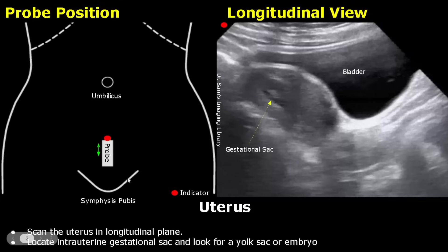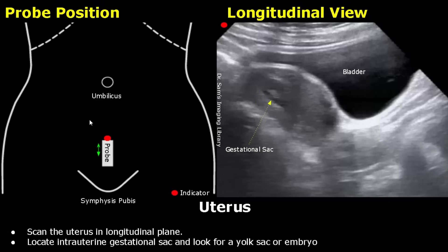First, scan the uterus in longitudinal plane. We place the probe between the umbilicus and the symphysis pubis joint — this is the hypogastric region, also called the suprapubic region. Place the probe in the midline in longitudinal orientation. The patient's bladder must be full, and you will find the uterus posterior to the bladder.